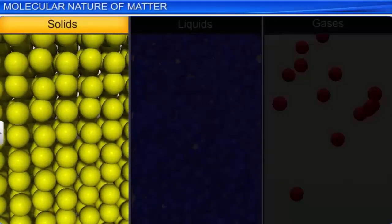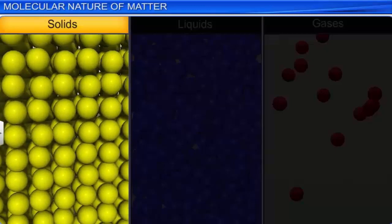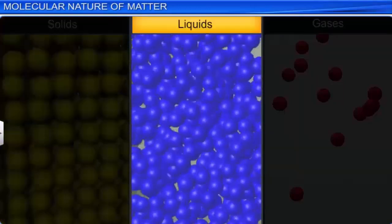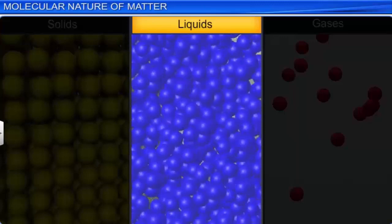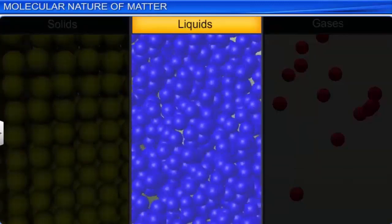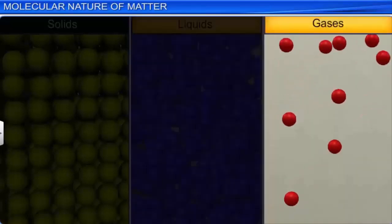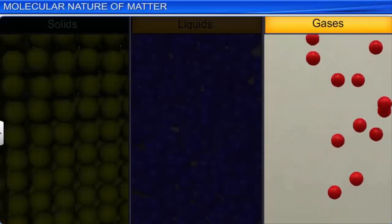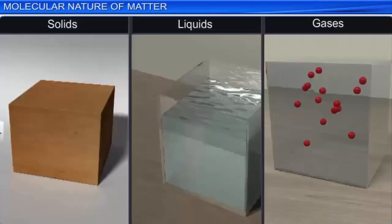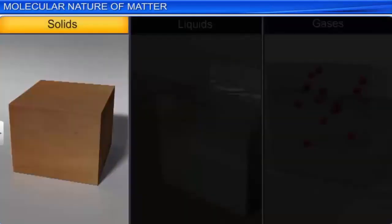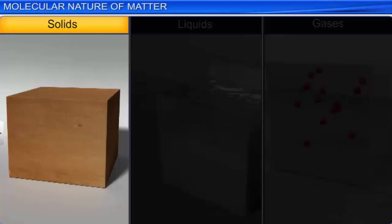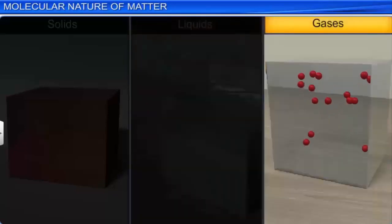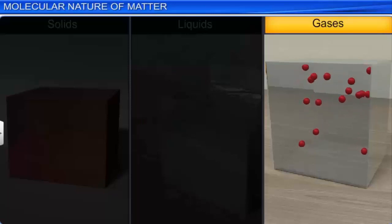In solids, the atoms are tightly packed — that is, the inter-atomic force is strong. In liquids, the atoms are loosely packed — that is, the inter-atomic force is weak. In gases, atoms are very loosely packed — that is, the inter-atomic force is negligible. Due to inter-atomic forces, solids have a definite size, shape, and volume. Liquids have definite volume but no definite size and shape. And gases have neither fixed volume nor definite size and shape.